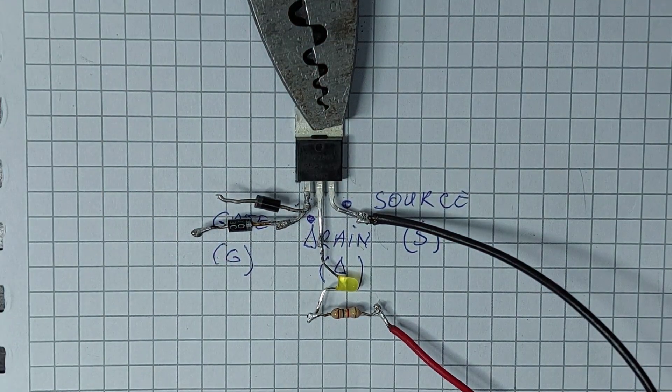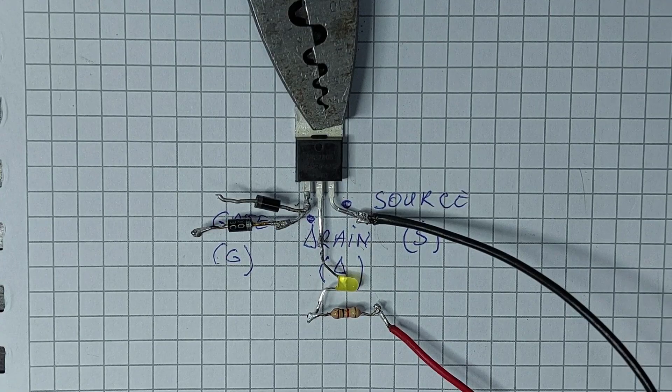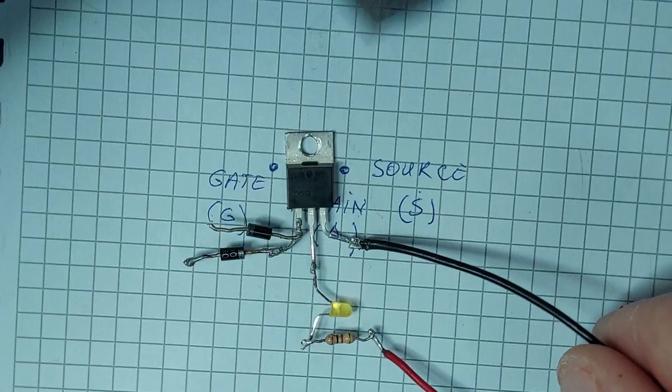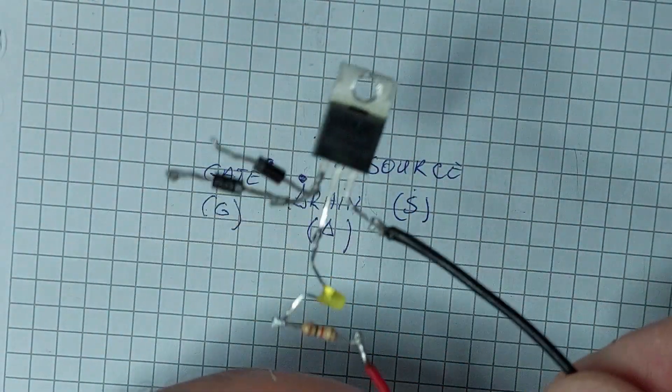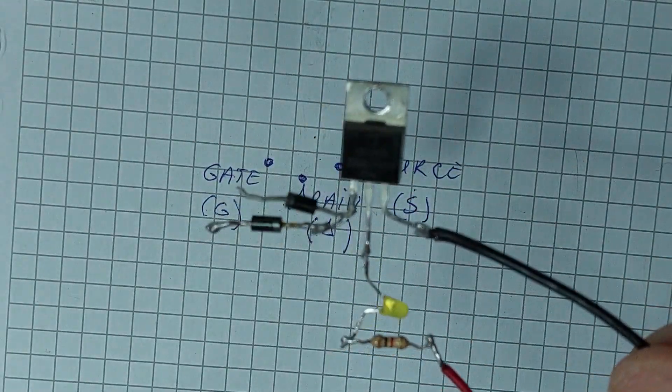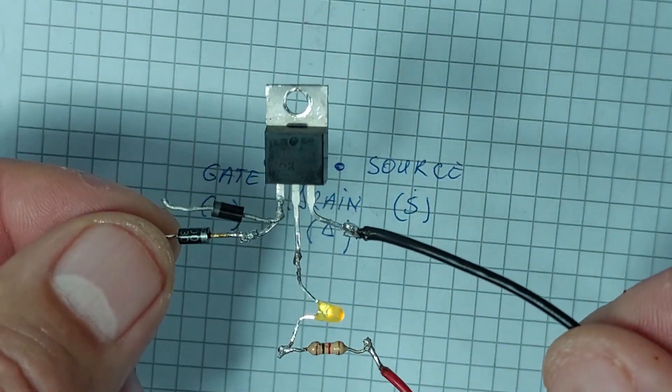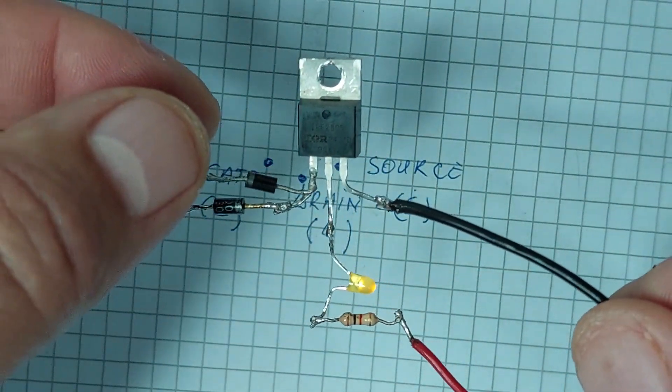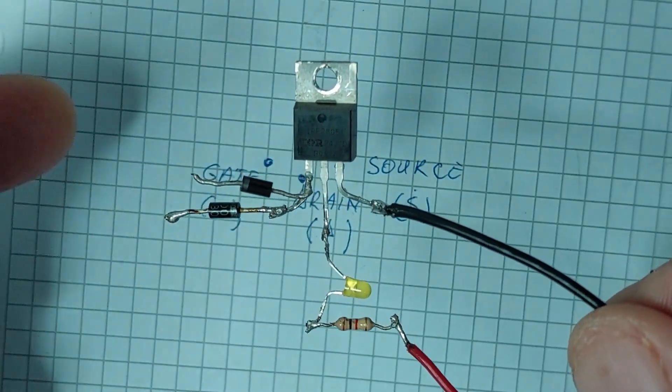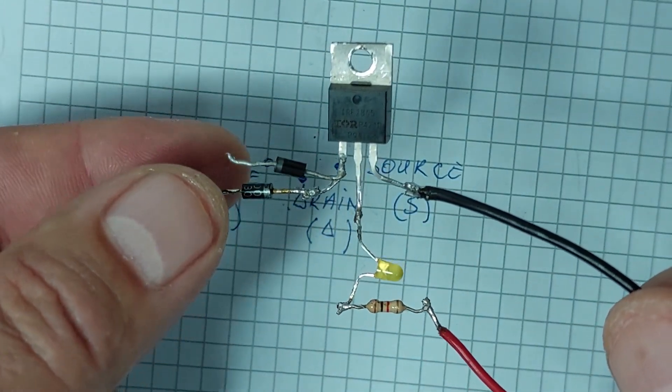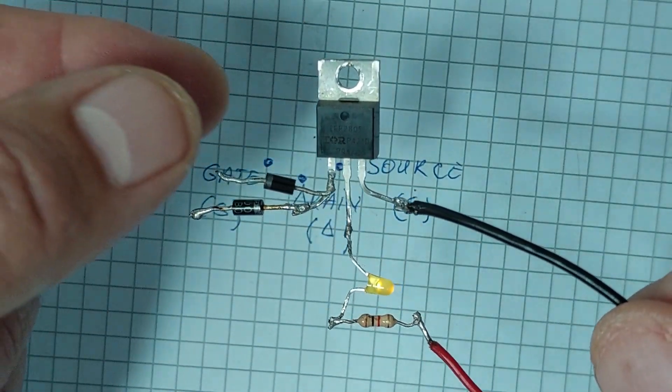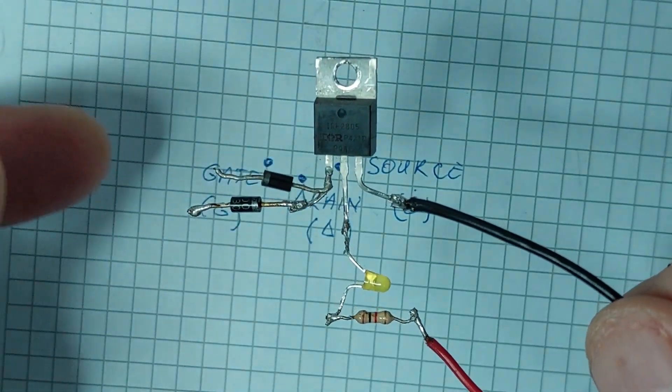As you can see, the MOSFET acts as a switch. When I apply a small charge to the gate by touching one diode, the LED lights up, and when I release or switch to the other diode, it turns off. This simple demonstration showcases the switching capability of a MOSFET, where the small control signal at the gate dictates the current flow from drain to source, allowing or stopping the LED's illumination.